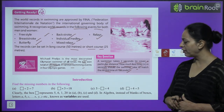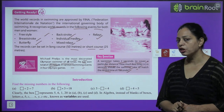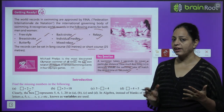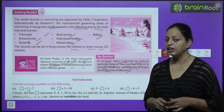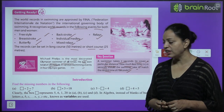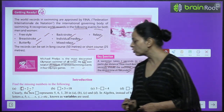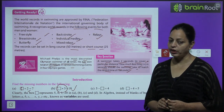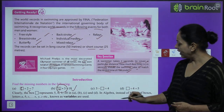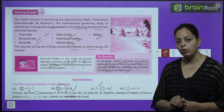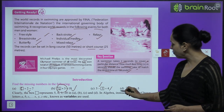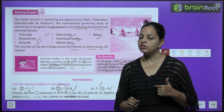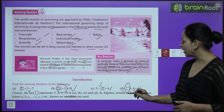Equation introduction — find the missing numbers. For example: blank plus 2 equals 7. It's very easy — that must be 5, since 5 plus 2 equals 7. Which number should be divided by 4 to give 5? That is 20.